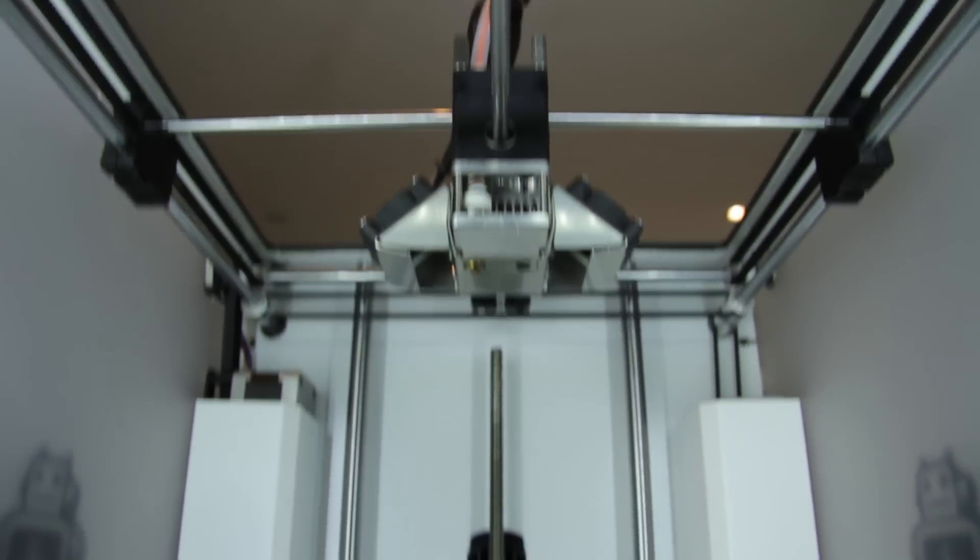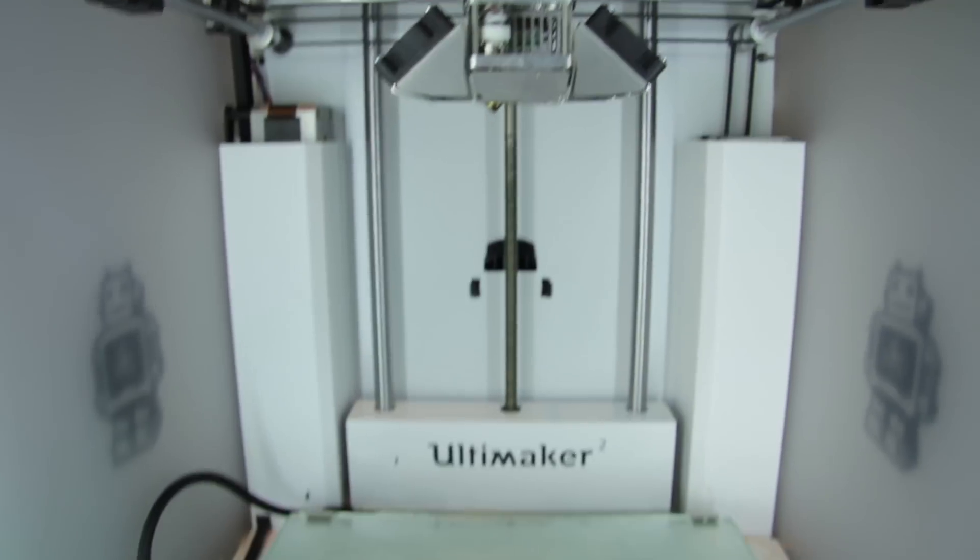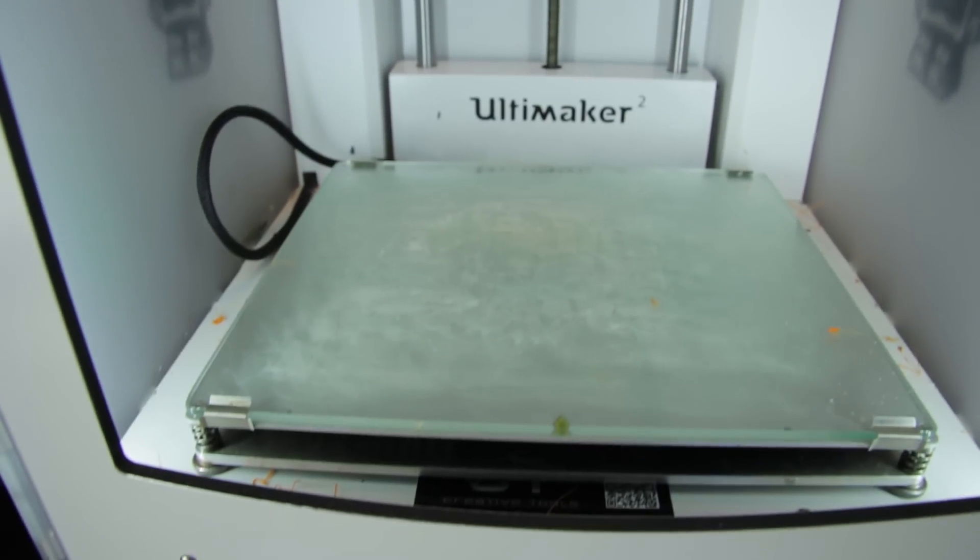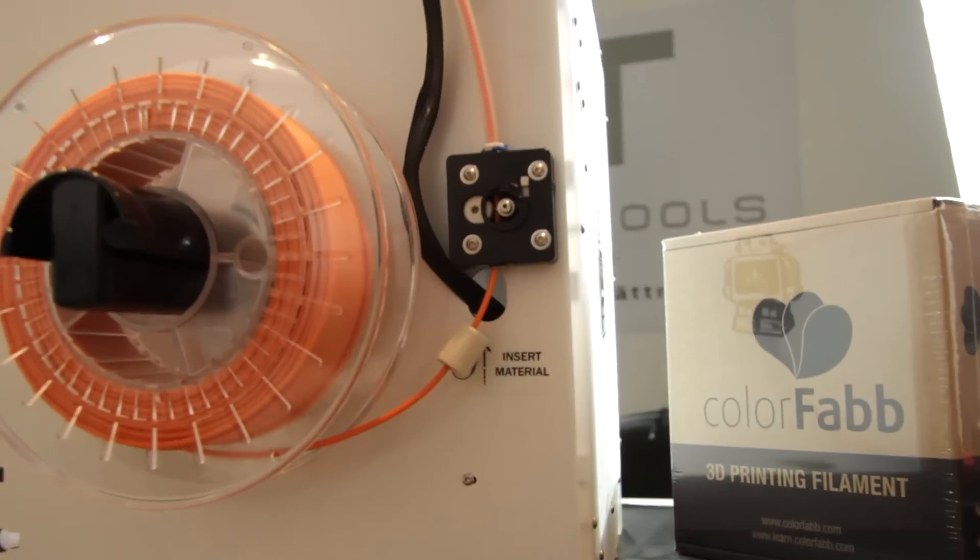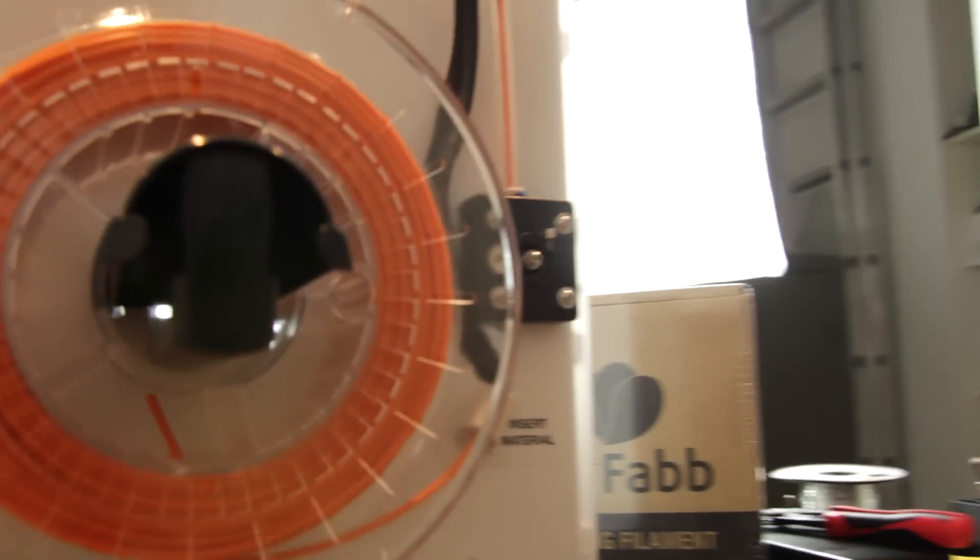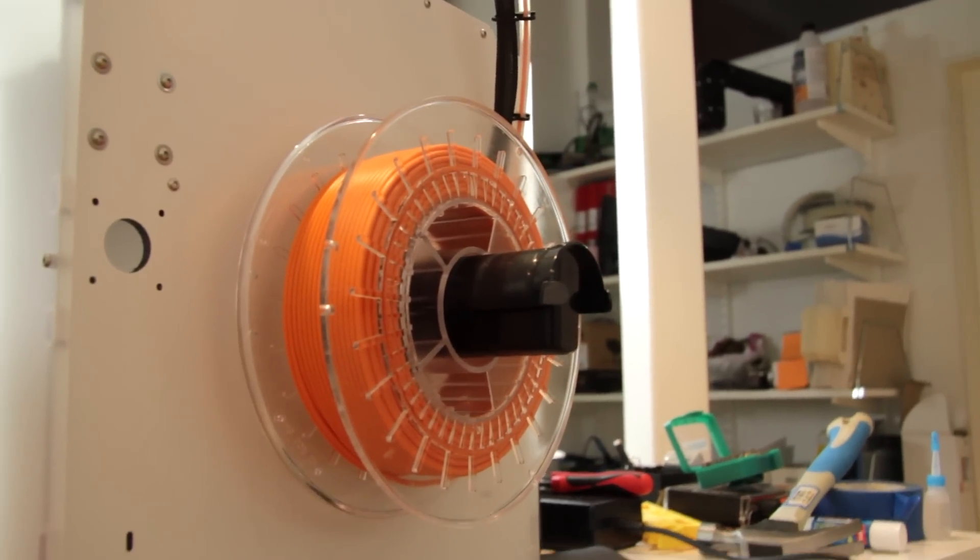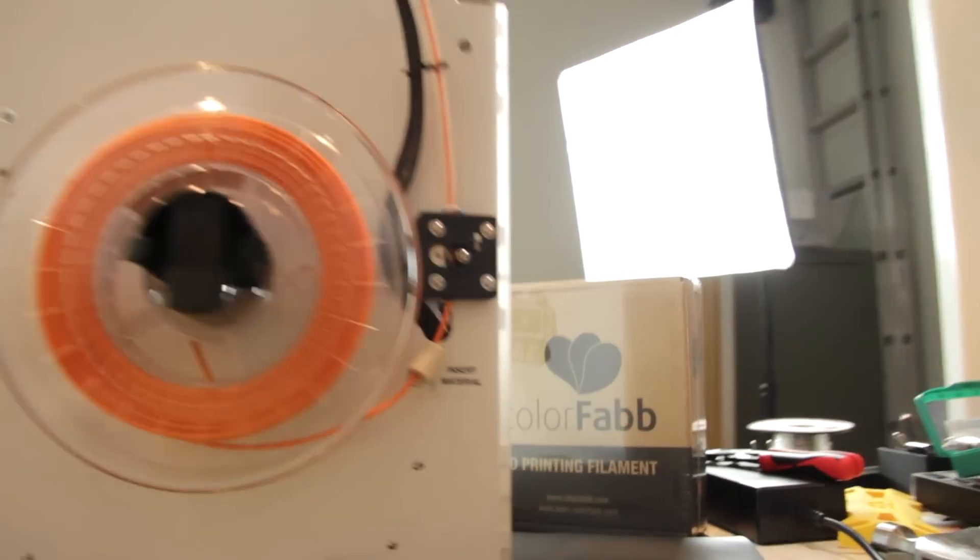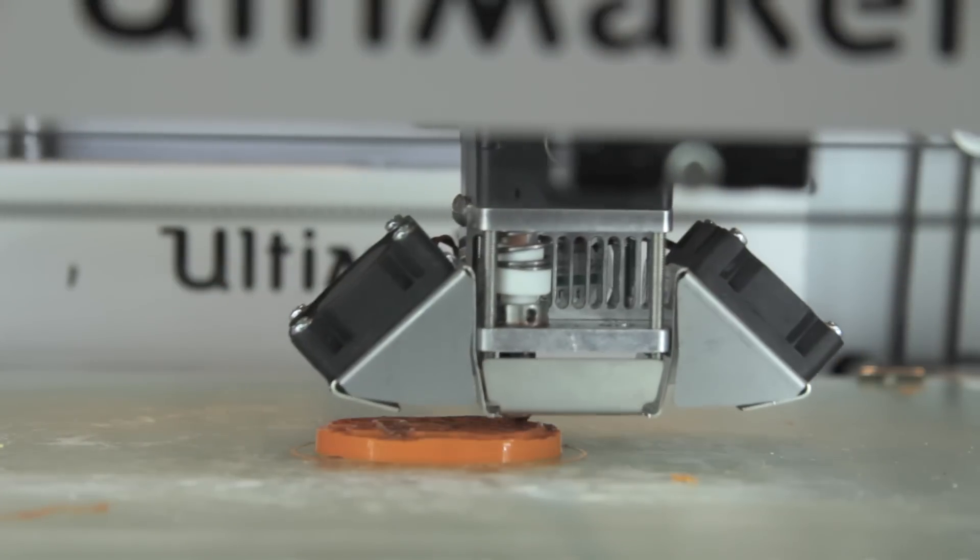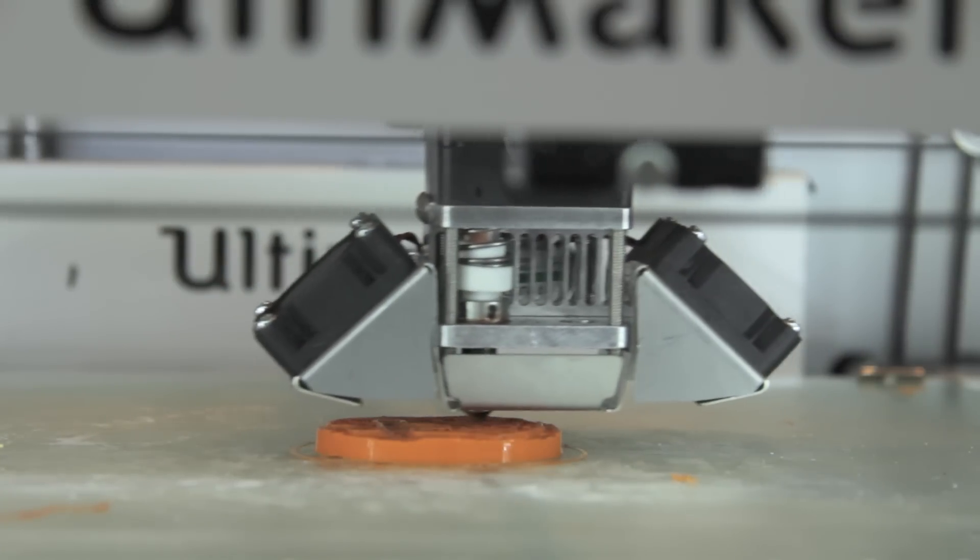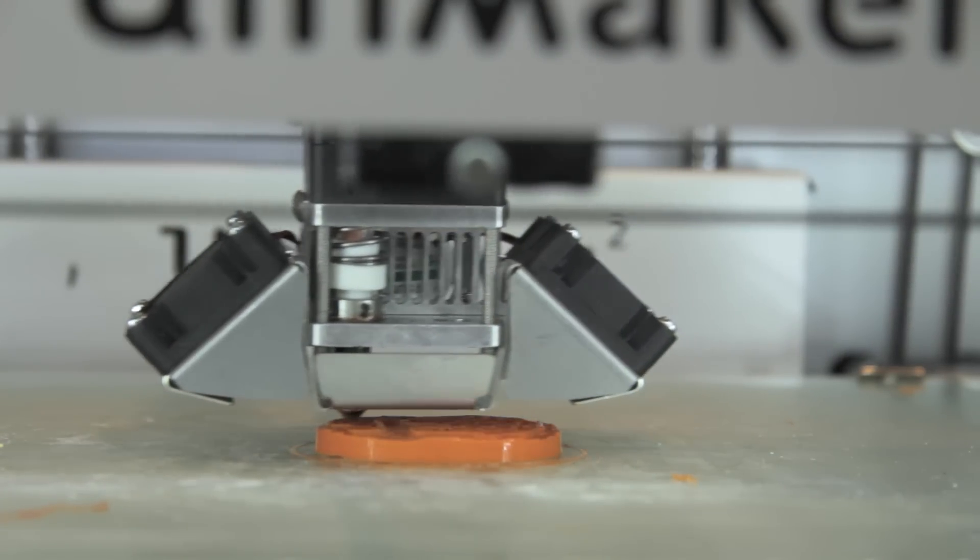For materials, you're using 2.85 to 3.0 mm diameter filament. You can actually choose if you want to have 2.85 or 3.0. There's also been some tests with 1.75 but I wouldn't recommend that. For materials, you could use PLA, ABS, PET among others.